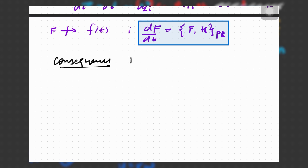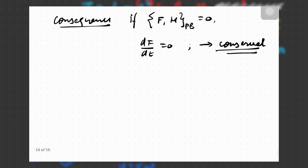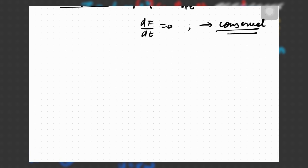The consequence is very interesting: if the Poisson bracket of F with H is zero, then dF/dt is zero, meaning F is conserved. So to find conservation laws in classical mechanics, you don't really have to do anything except check whether F has no explicit time dependence and whether its Poisson bracket with the Hamiltonian is zero.